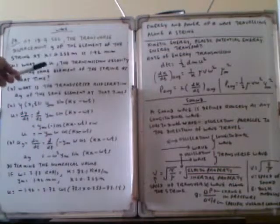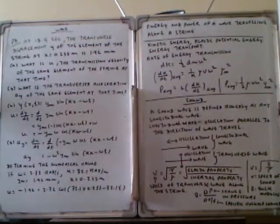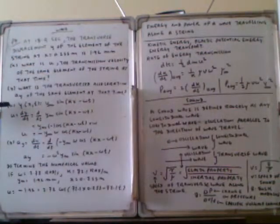We have to calculate the value of k, and also calculate u, where u is the velocity — the transverse velocity of the same element of the string at that time. And ay is the transverse acceleration of the same element at that time. So we write down the wave equation: y(x,t) = Ym·sin(kx - ωt).